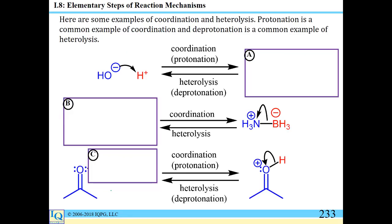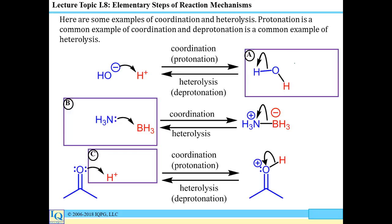Starting with coordination: one of the early reactions we learned is the neutralization when a strong base and a strong acid come in contact with one another to form water — an example of a coordination reaction, a Lewis acid–Lewis base reaction, where one sigma bond is formed. The opposite would be heterolysis, where the water would break into the strong base and the strong acid. You don't need charged species for coordination: BH3, which has less than an octet, can have a neutral species donate a lone pair to form a zwitterion.